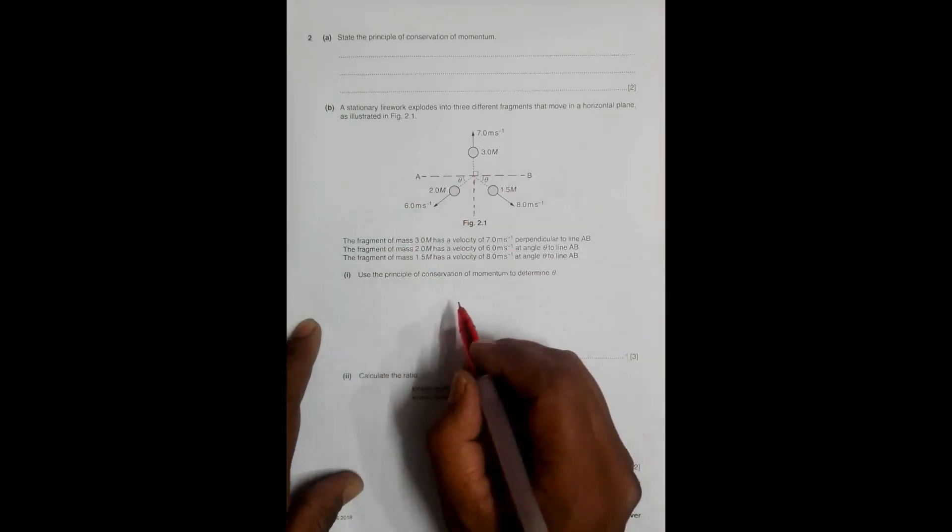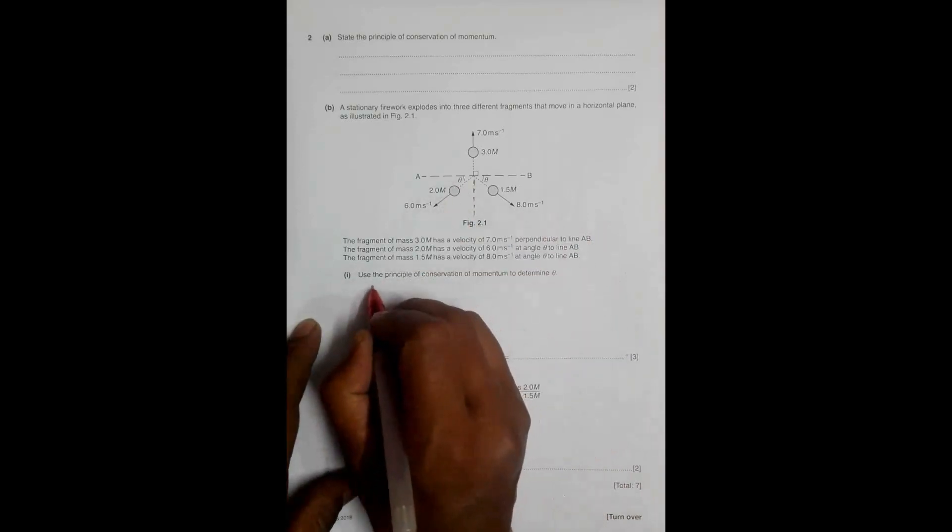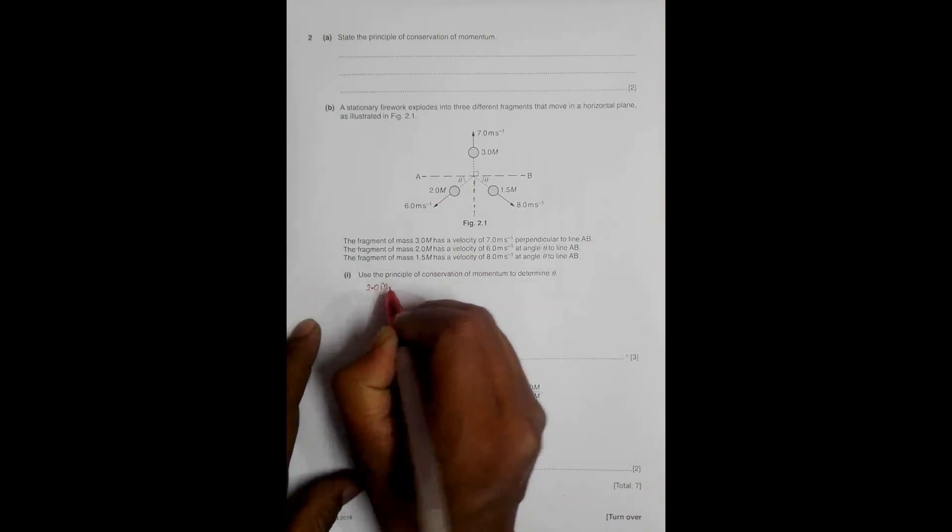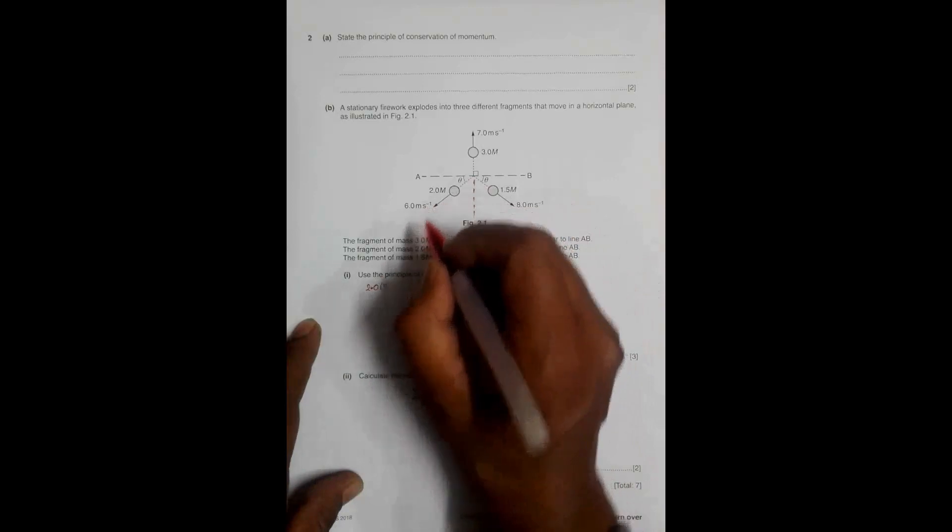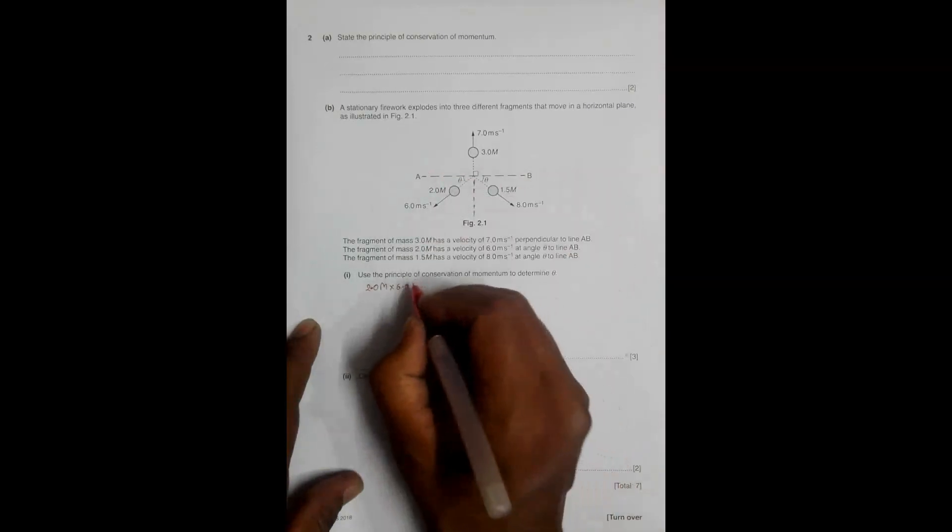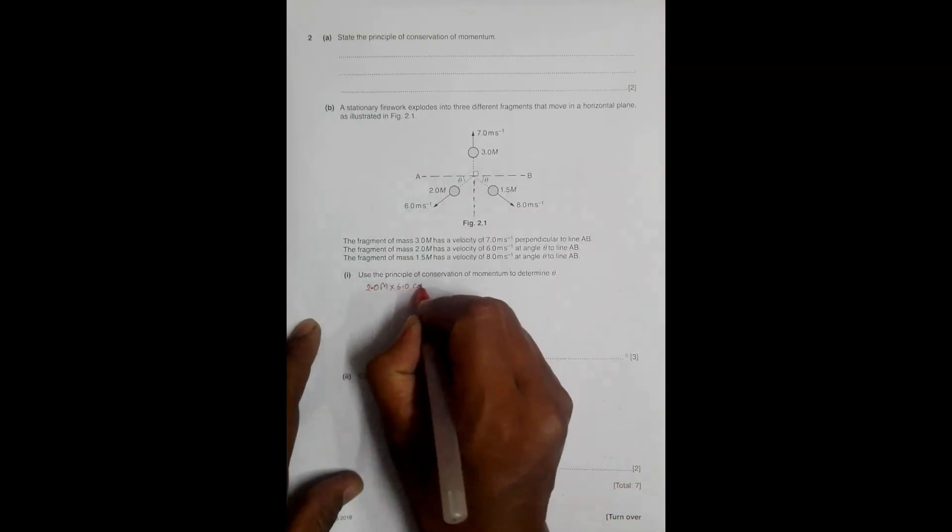In the horizontal direction, we have the momentum: 2.0m into 6.0 times cos theta should be equal to 1.5m into 8.0 times cos theta.